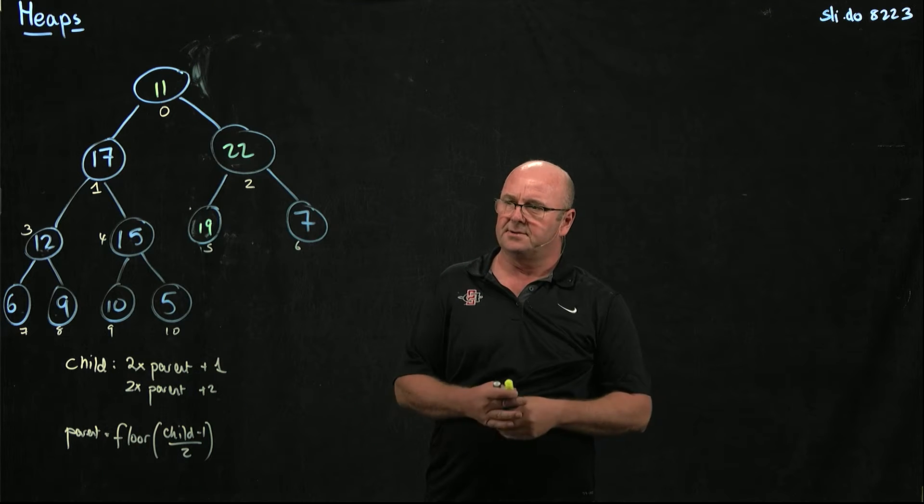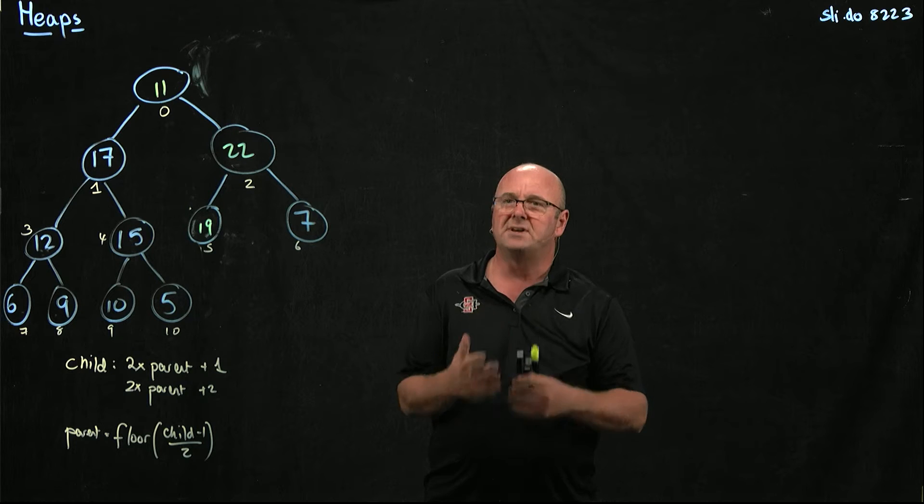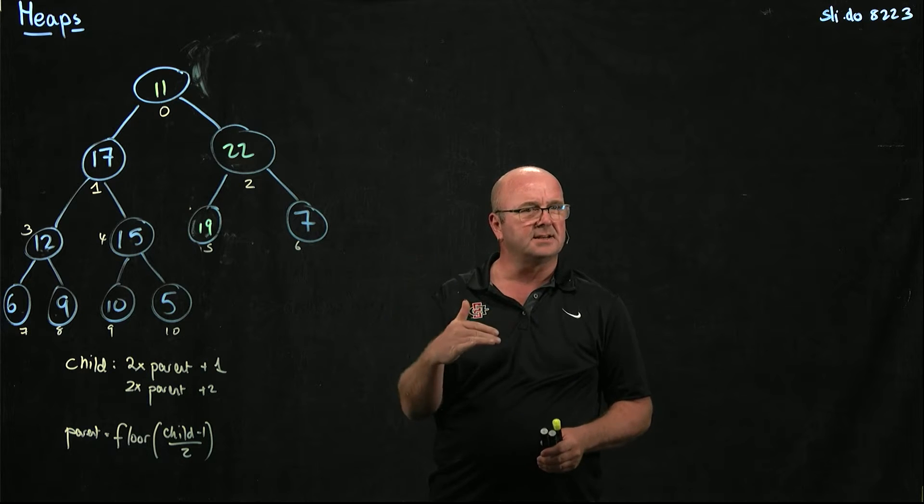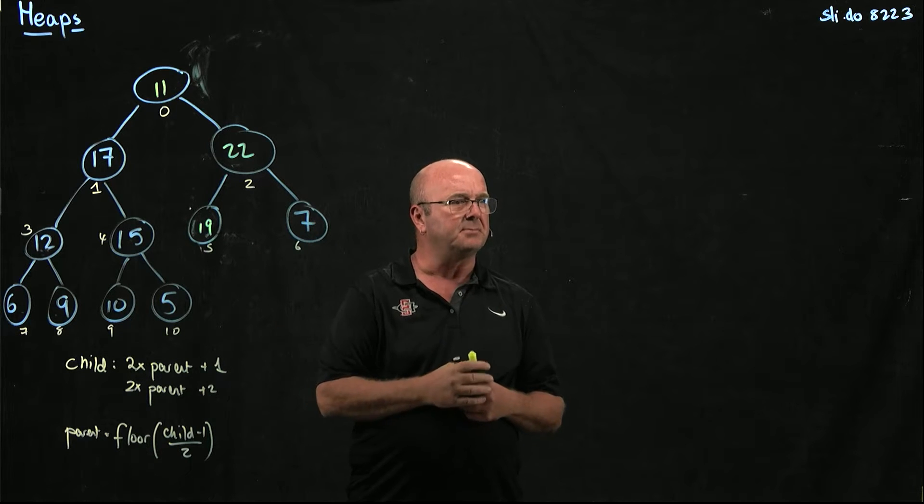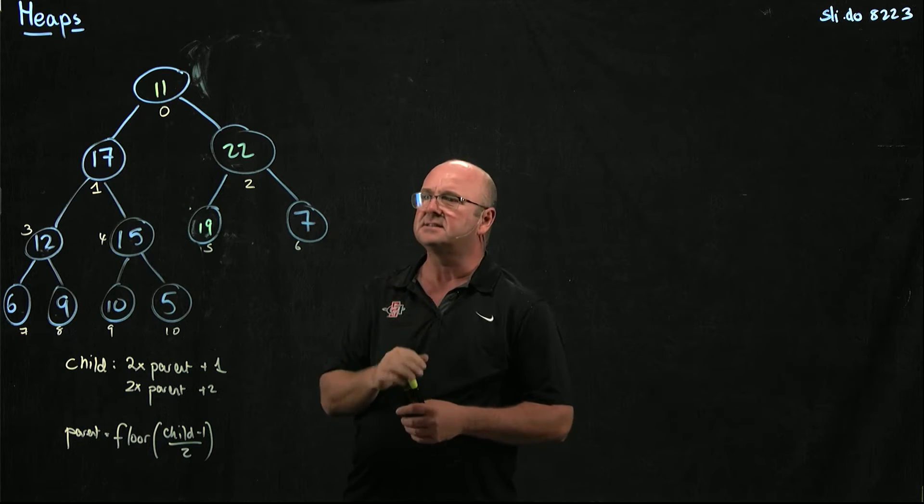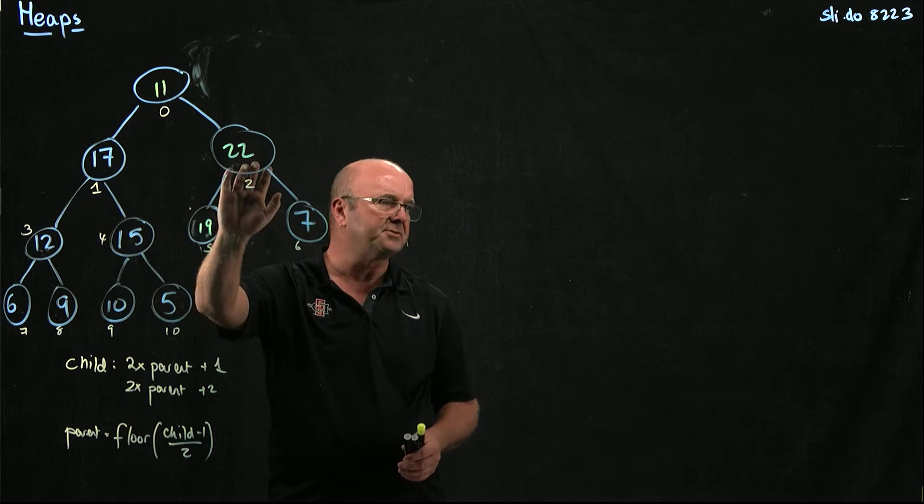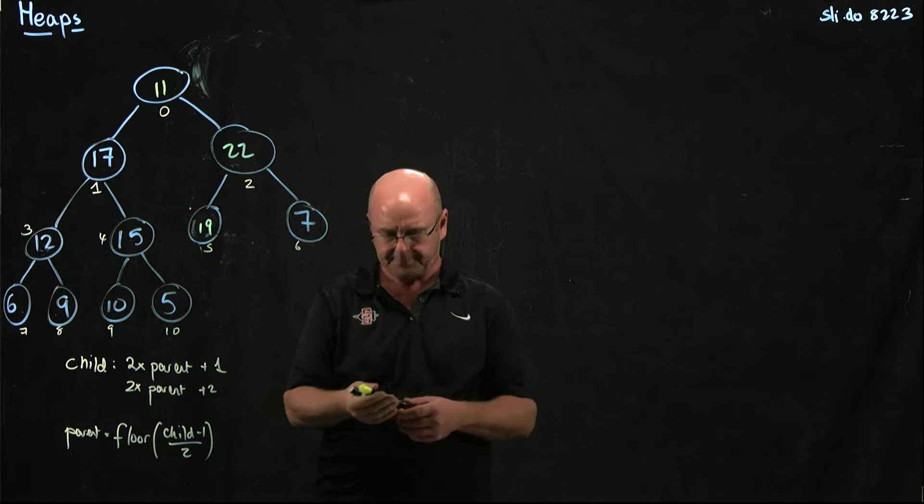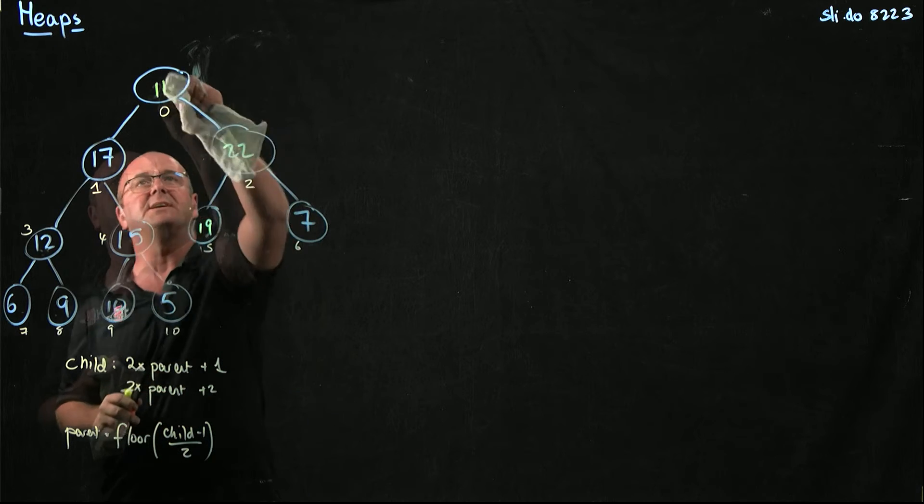And then what do we do? We check and see, is it smaller than the children? And if it's smaller than the children, we have to do a swap. And in this case it is, and so we swap with the larger of the two children. So in this case, we would take the 11 and swap it with the 22.